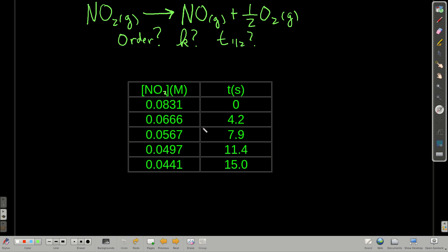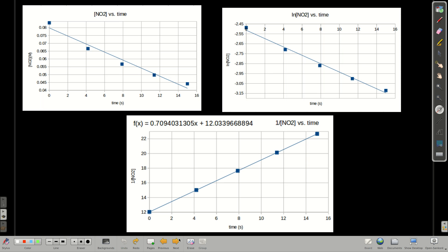We're going to plot this data: concentration versus time, natural log of the concentration versus time, and 1 over the concentration versus time — corresponding to zero order, first order, or second order — depending on which gives us the best straight line.